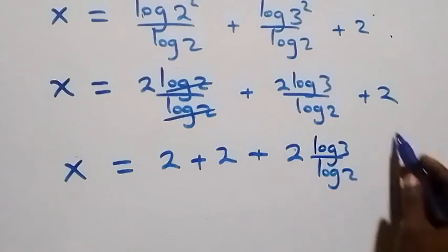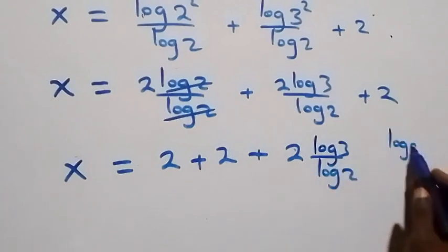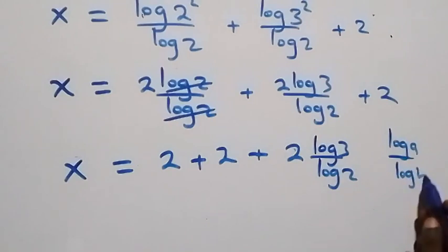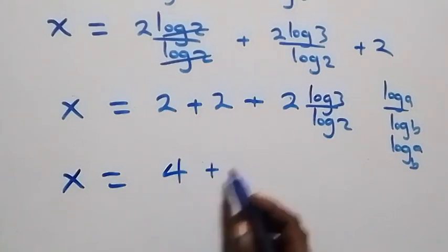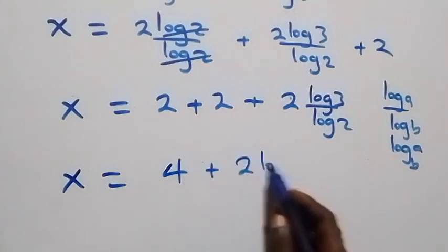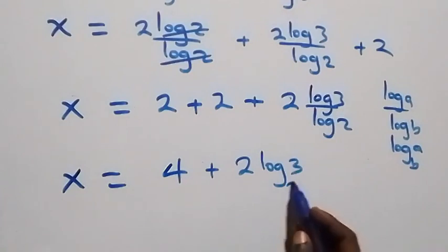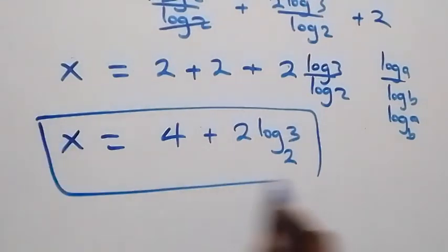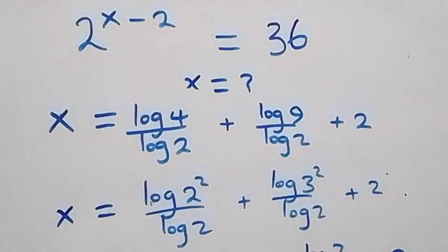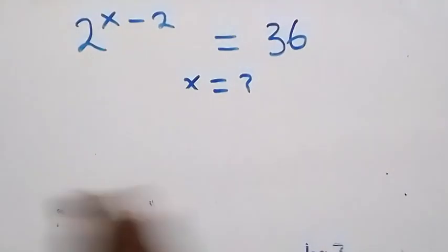Applying the change of base formula, log a over log b is the same as log a to base b. So x equals 2 plus 2, which is 4, plus 2 log 3 base 2. Therefore x equals 4 plus 2 log 3 base 2. Now let's verify this satisfies the original equation by substituting back.